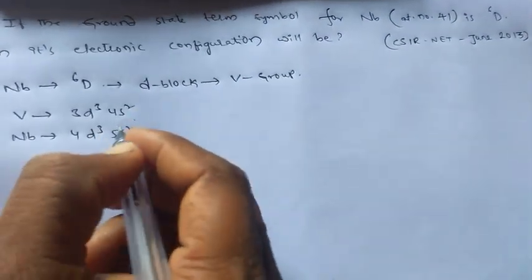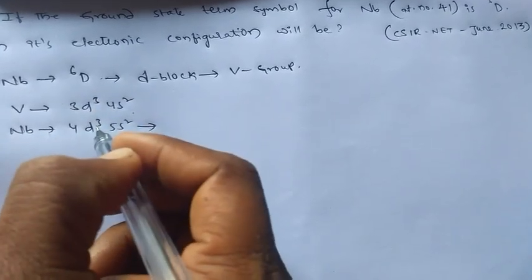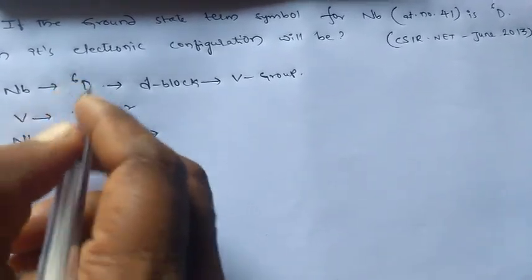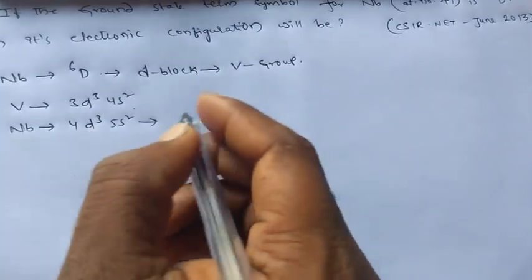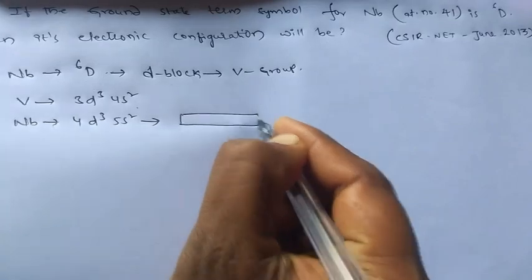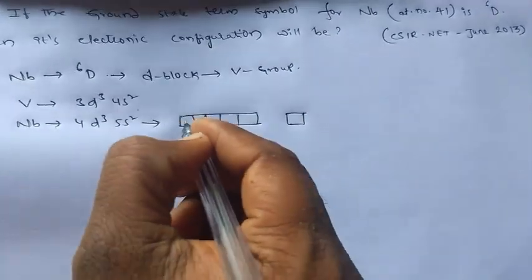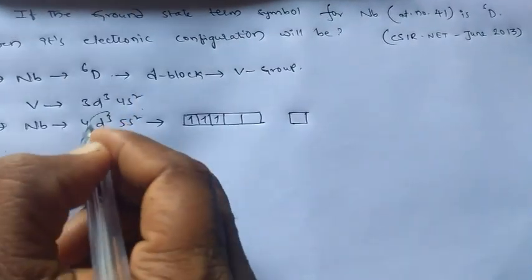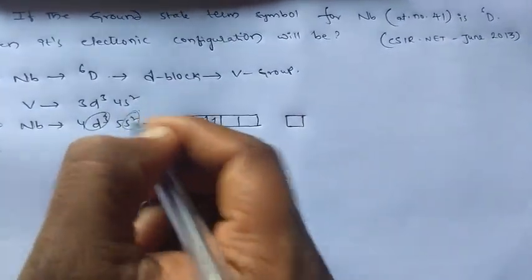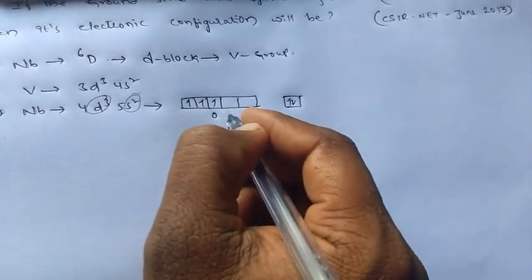So for this, if you observe, if you check the term symbol for this electronic configuration, is it resembles D6 or not, we need to check for it. So we have 1, 2, 3, 3D3 electrons and 2S2 electrons. For this I am calculating L values.